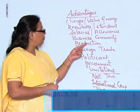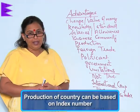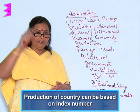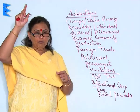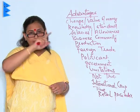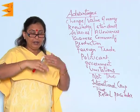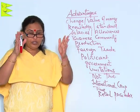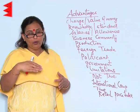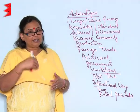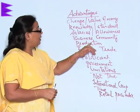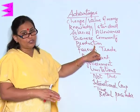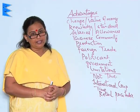The production of the country can also be based on the index number. For example, the production was these many tons and the consumption was those many tons, so whether there is more need of production, or the production was sufficient, or it was much more than the demand. The basis of production can be best understood by referring to the index number.